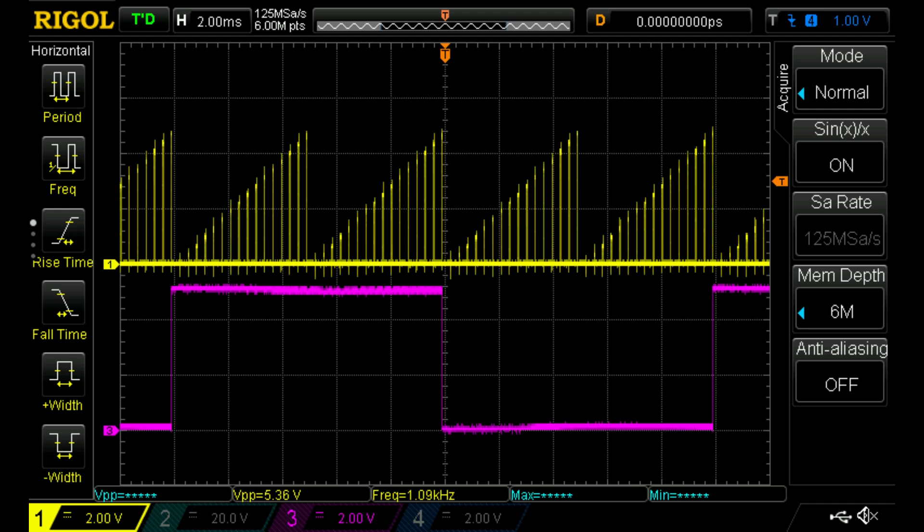Lots of really short impulses. That should be a great torture test for a peak detector.